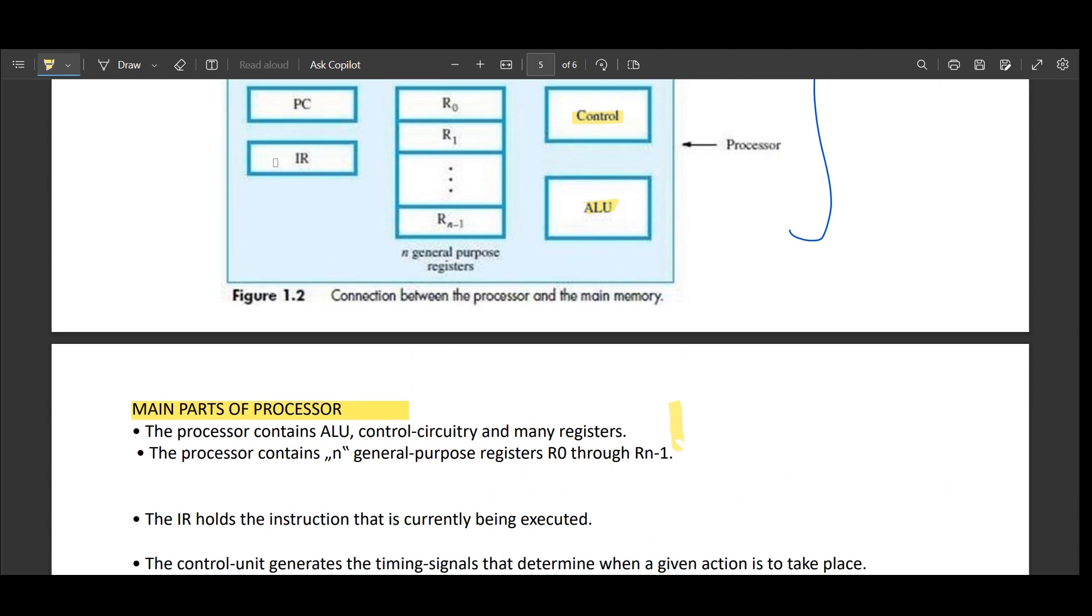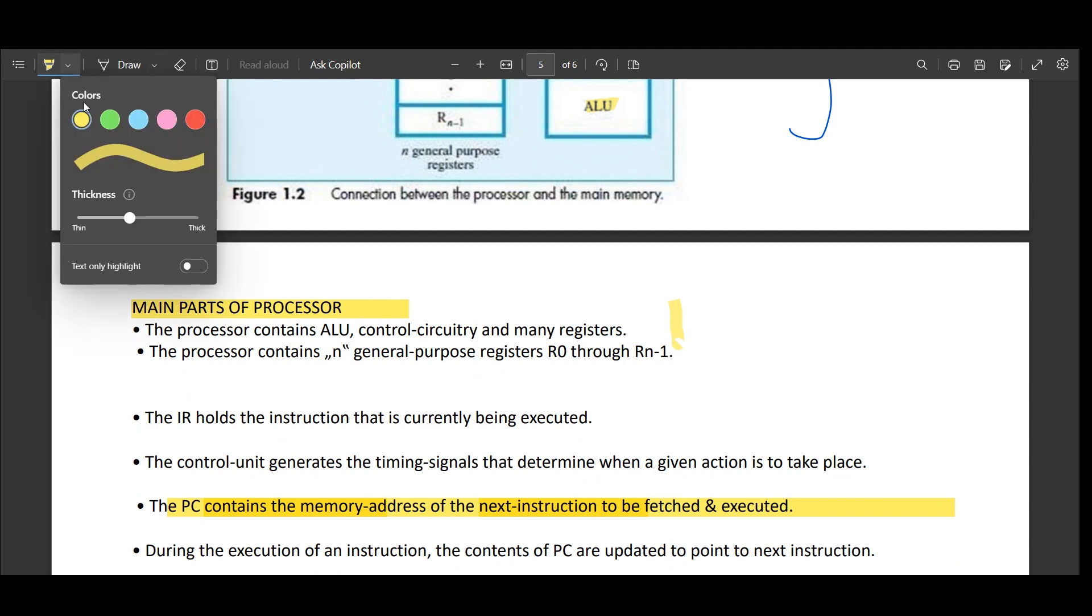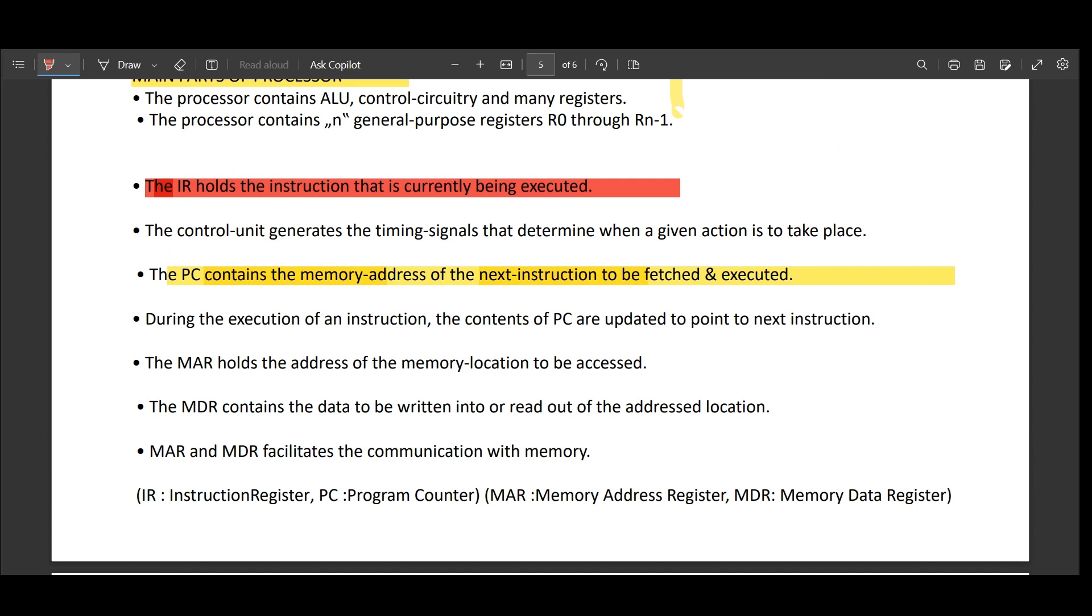Next, we will see what is IR. IR is instruction register. So what does this instruction register do? It holds the instruction that is currently being executed. This is an important definition. What does the PC do? It contains the memory address of the next instruction to be fetched and executed, whereas the instruction register, that is the IR, holds the instruction that is currently being executed. Remember what this holds and what that holds. Then you will be getting around three marks and with that diagram somewhere around five marks.